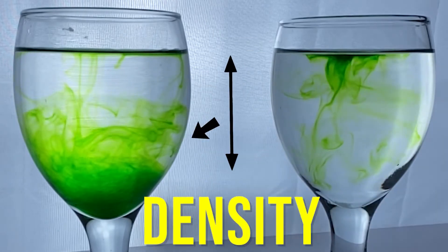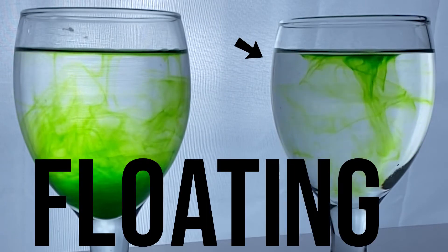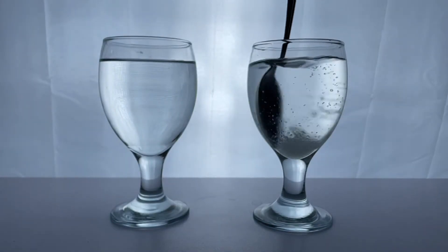Sugar increases the water density more than the natural density of water, so food color is floating and is not mixing with water.